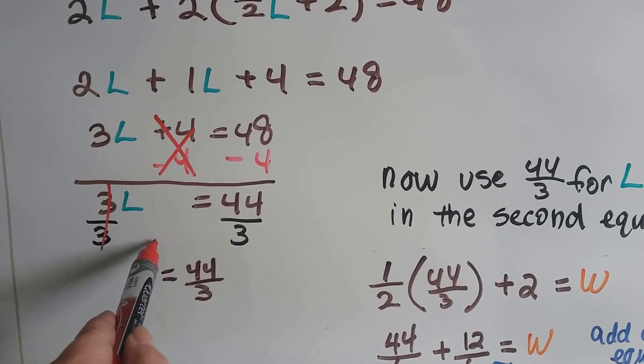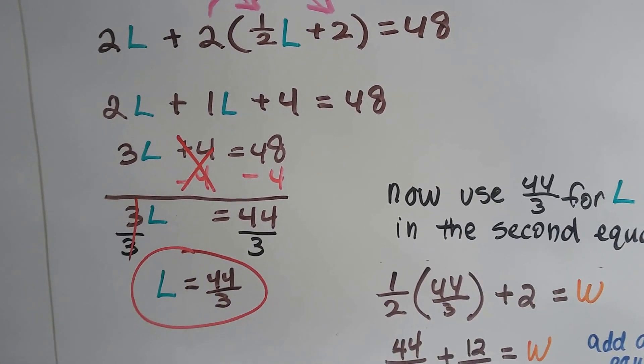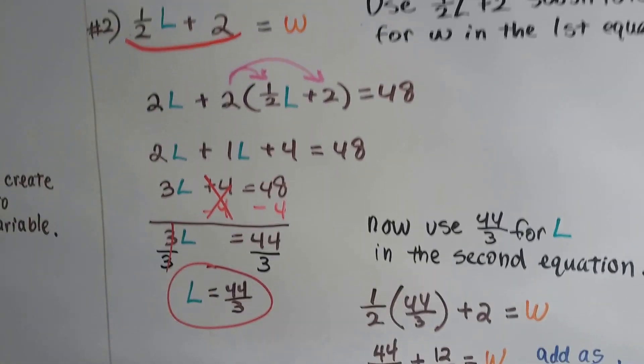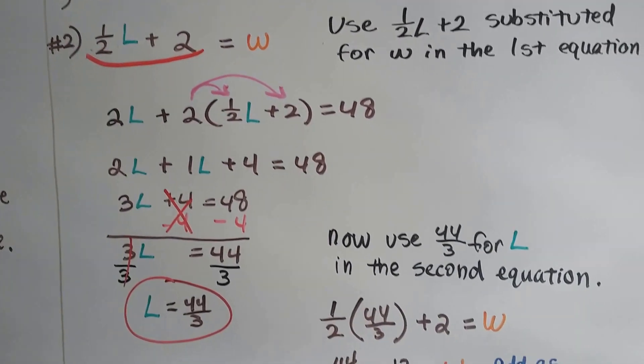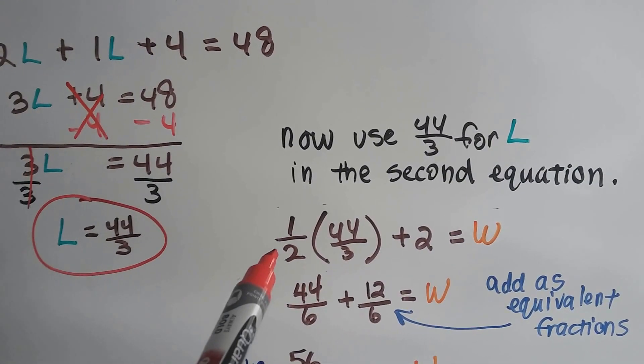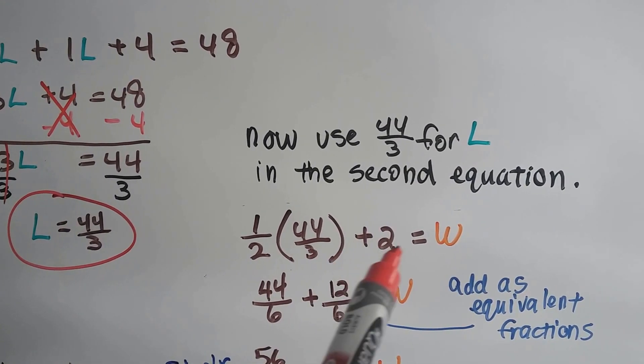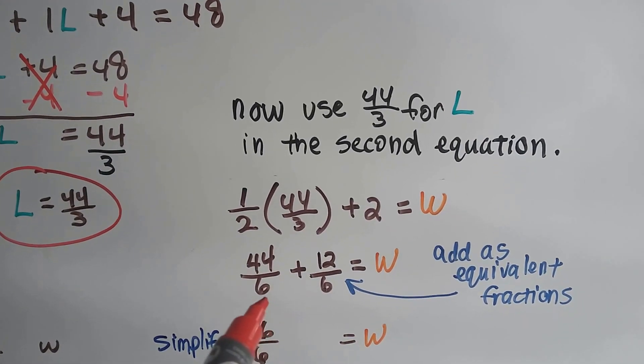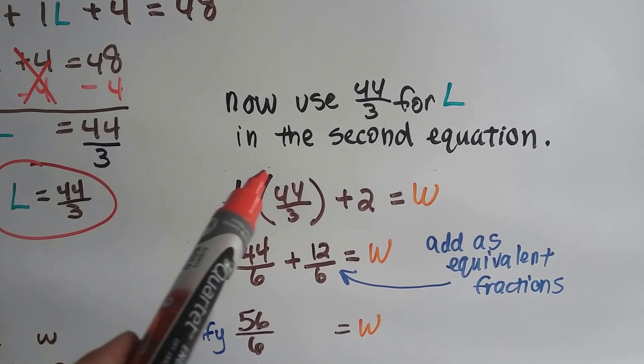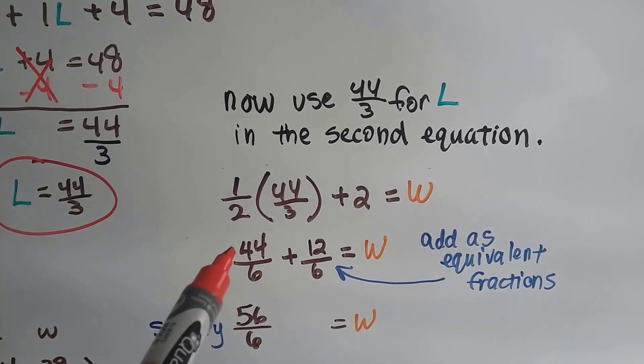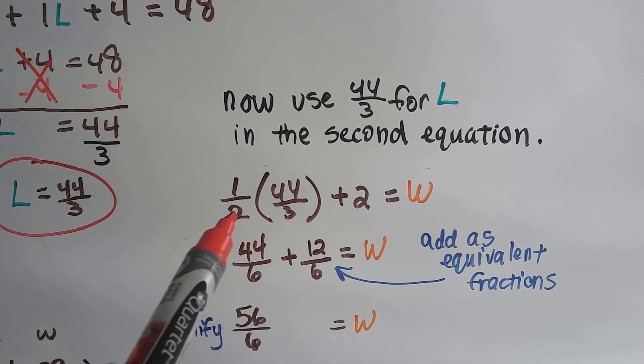Now, now that we've got this, we can use this for L in the second equation, half L plus 2. So we've got half times 44 over 3 plus that 2 is going to equal our width. Well, a half times 44 over 3 is 44 over 6.